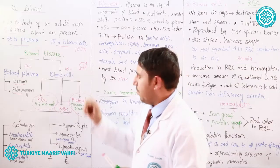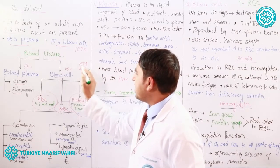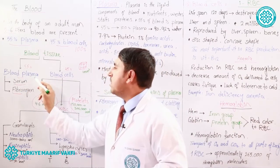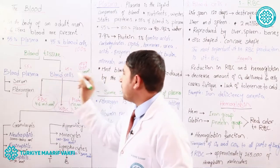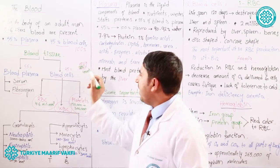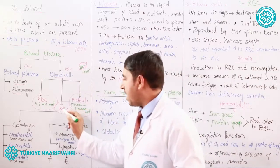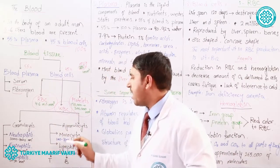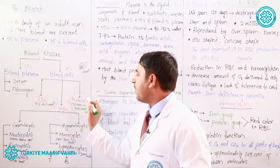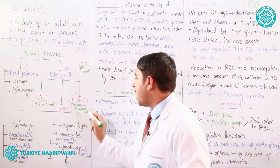Suppose we have a one millimeter cube filled with blood. We can see that 55 percent is plasma and the rest is blood cells. In this one millimeter cube of blood, we have four to six million RBCs. WBC has many types, and for each type there are different ranges. Platelets, also called thrombocytes, number from 150,000 to 300,000 in one millimeter cube.